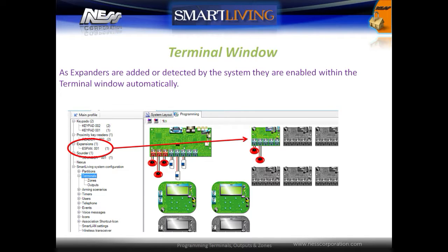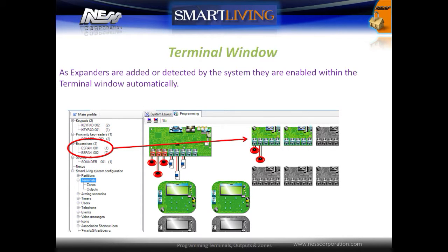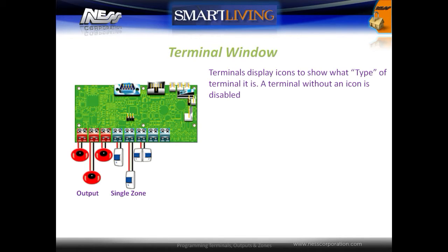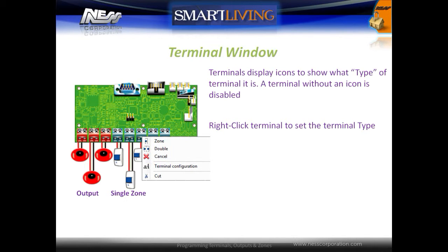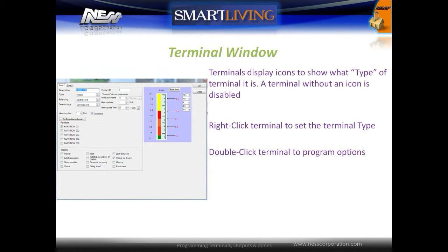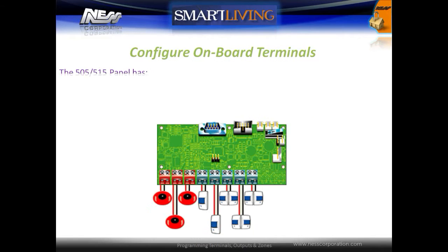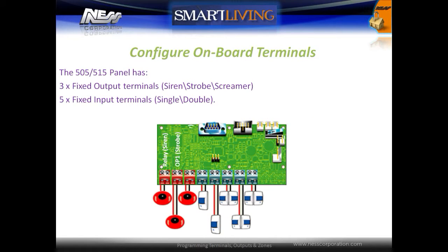As expanders are added or detected by the system, they are enabled automatically. Within the terminals window, terminals display icons to show what type of terminal has been configured. A terminal without an icon is disabled. Right-click on the terminal to set the terminal type; double-click a terminal to open the programming options window.